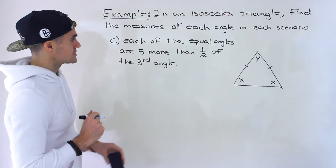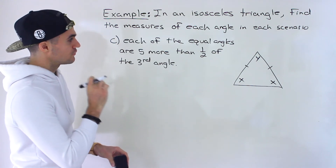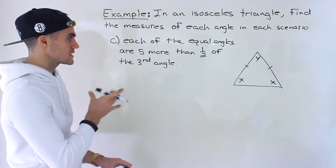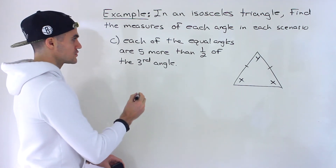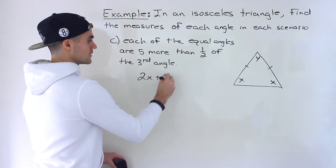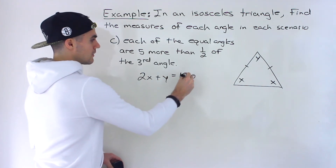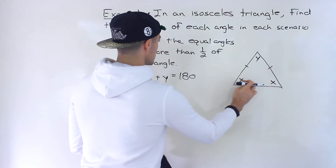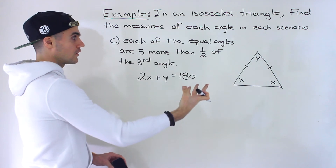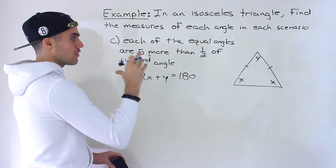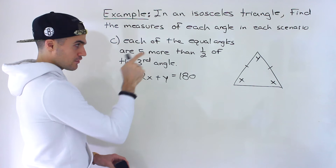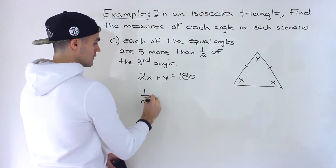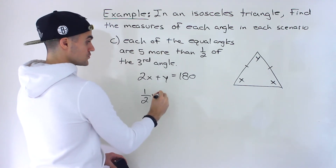Finally, Part C: each of the equal angles are five more than one half of the third angle. We still have 2x plus y equals 180. Reading carefully: take the third angle y, multiply it by one half, then add five — that gives us each of the equal angles.